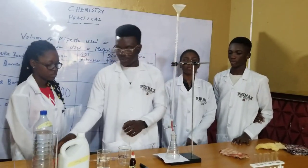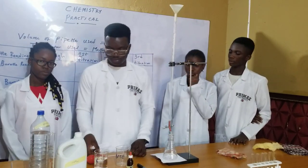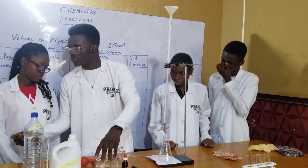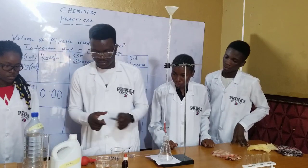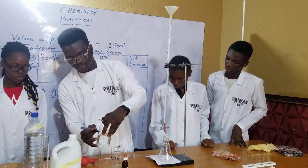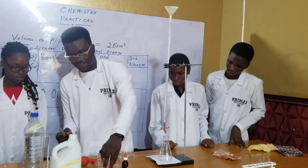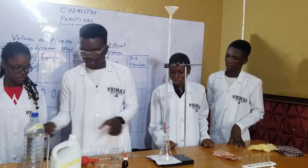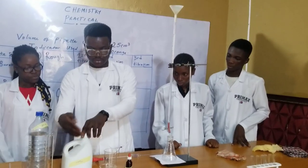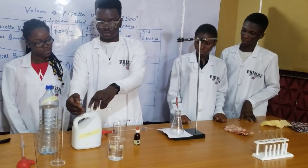Now let's pipette the base. In pipetting the base, don't forget to label your solutions — that's our acid, that's our HCl. We use the beaker only to hold the liquid. We have our base here.